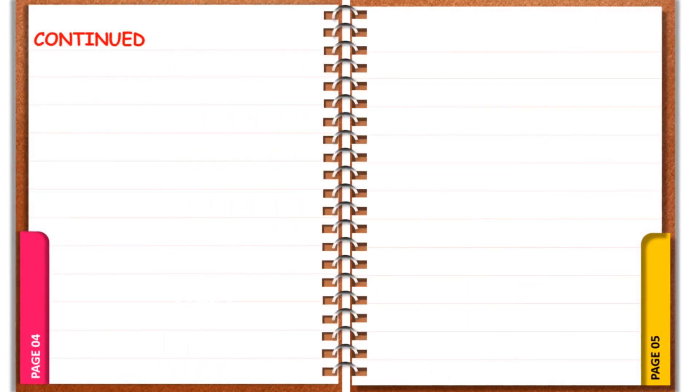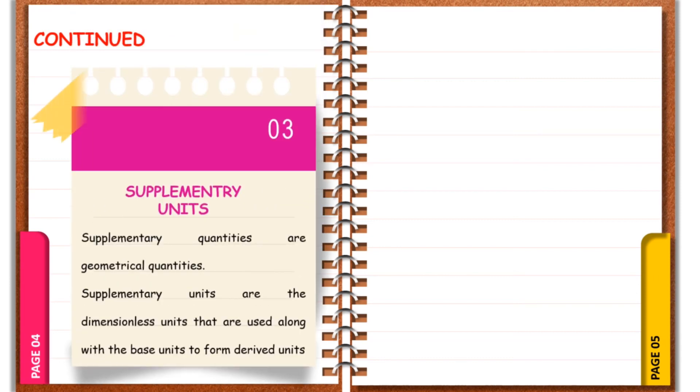Supplementary quantities are geometrical quantities. Supplementary units are the dimensionless units that are used along with the base units to form derived units. For example, radian and steradian.